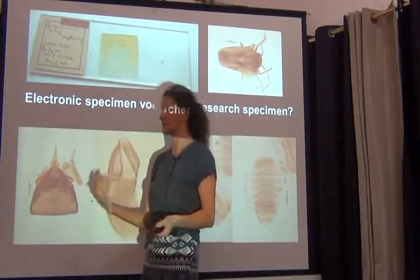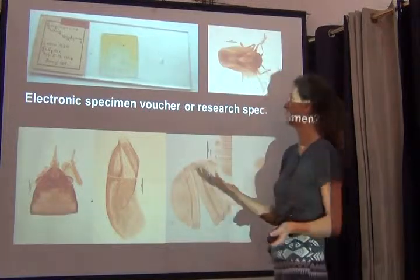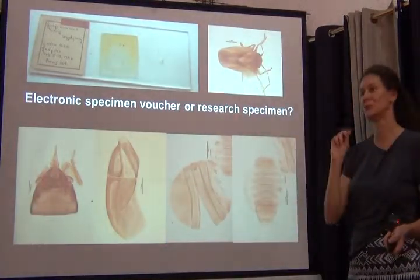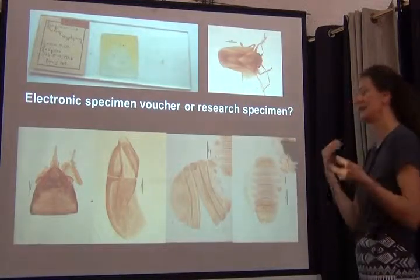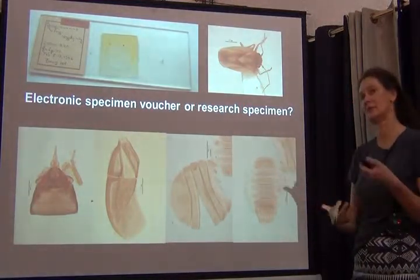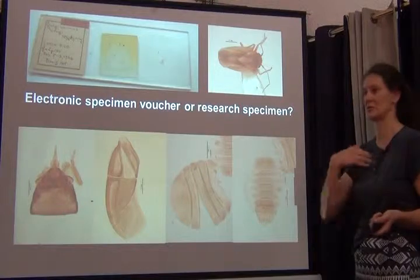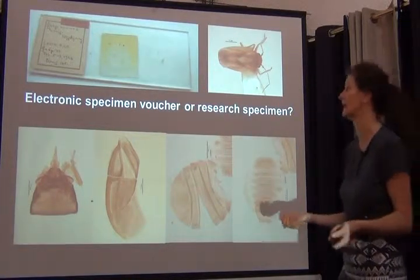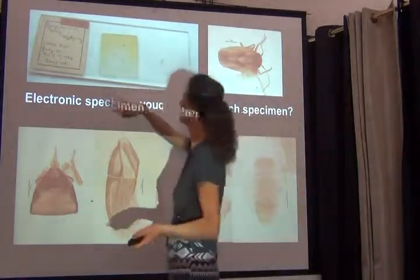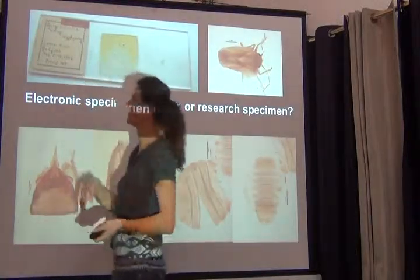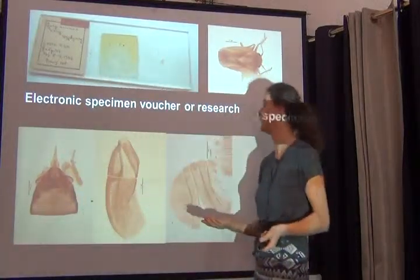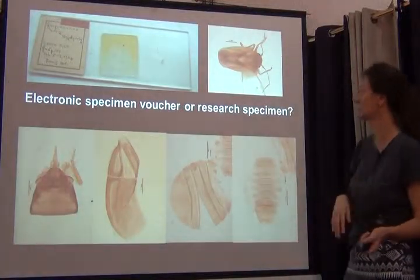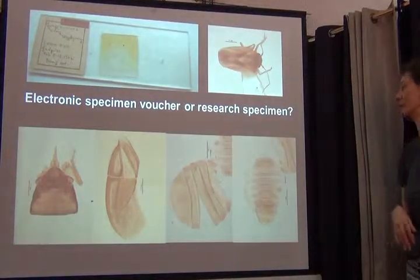In order for a taxonomist or someone working on a group to go back and confirm that what's on that slide is really that species, you would still have to loan out the microscopic slide or go to the institution to take another look at it. In this case it's maybe not quite as critical because there's a holotype specimen that's been really well documented in the original publication.